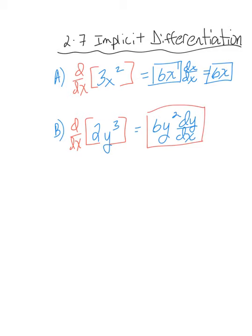Essentially, when you take the derivative of something that's not x, you find the derivative like you normally would — so 3 times 2 is 6y² — but then you tack on dy/dx, the derivative of y with respect to x. That's your answer for these expressions.